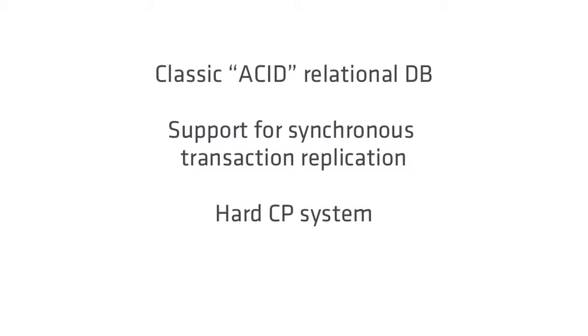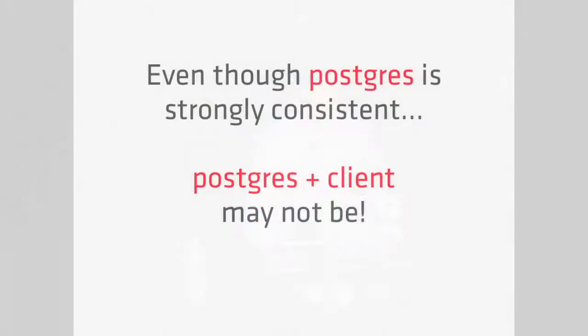We all like Postgres — it's a nice, classic, very heavily tested model of a sort of hard CP system. If you run it with a single primary and you don't promote your secondaries, it behaves very much like a single node system. It's not what we think of as distributed, because there's only one master. All your transactions are consistent on that node. If you lose access to that node, you're no longer available. However, the system is actually distributed because the clients are on the opposite side of a network.